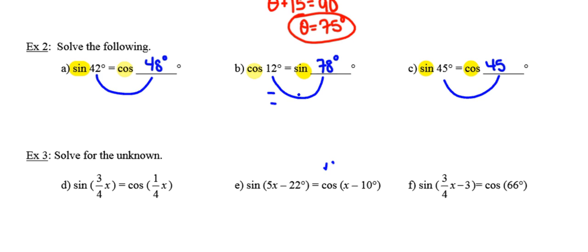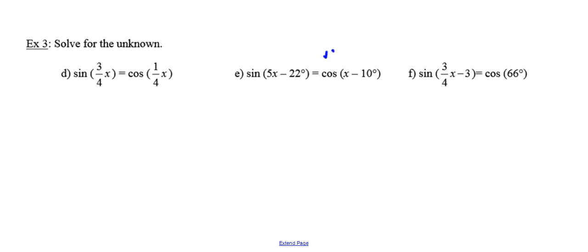Alright, down at the bottom in example three, they're asking us to again solve for the unknown. And again, notice that we're comparing the sine of one angle to the cosine of another. Sine of the first angle is equivalent to the cosine of the next. So what that tells me is that those angles must be complementary angles. So in other words, three-fourths x plus one-fourths x has to add to 90 degrees. So three-fourths and one-fourths is four-fourths or x, which is equal to 90 degrees.